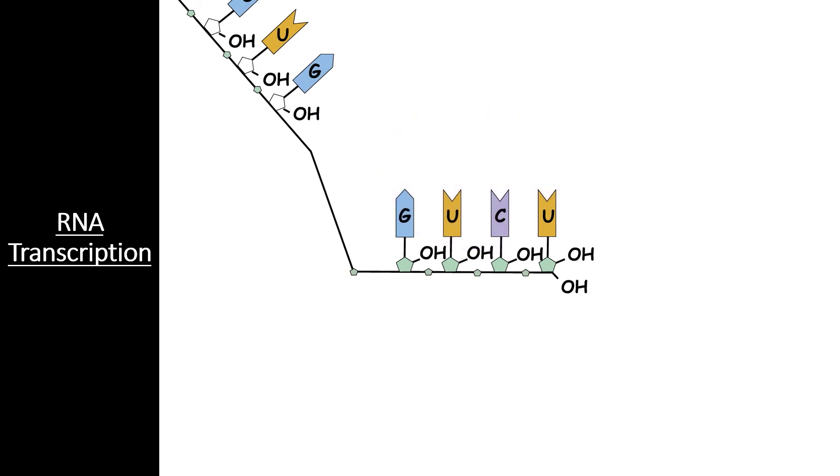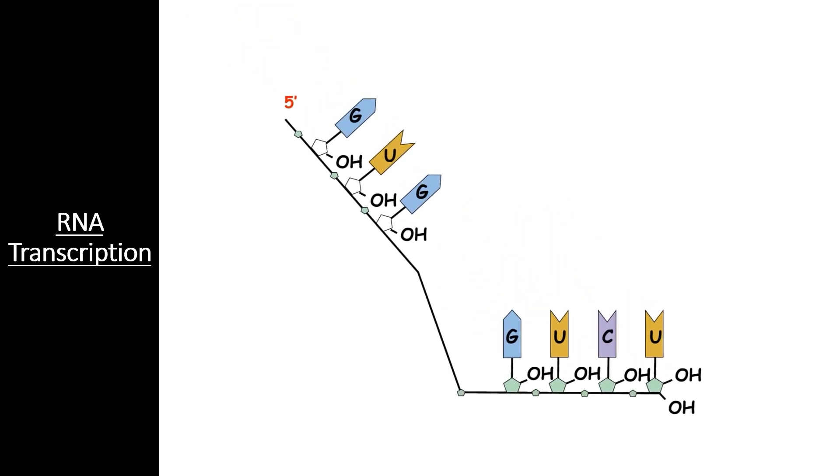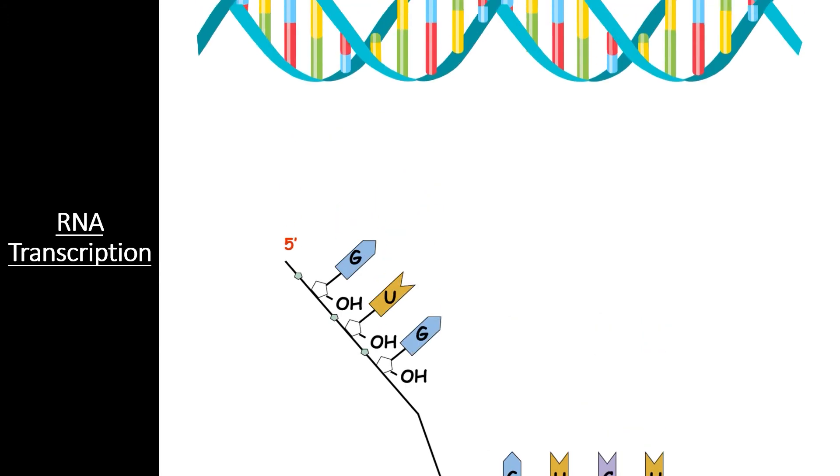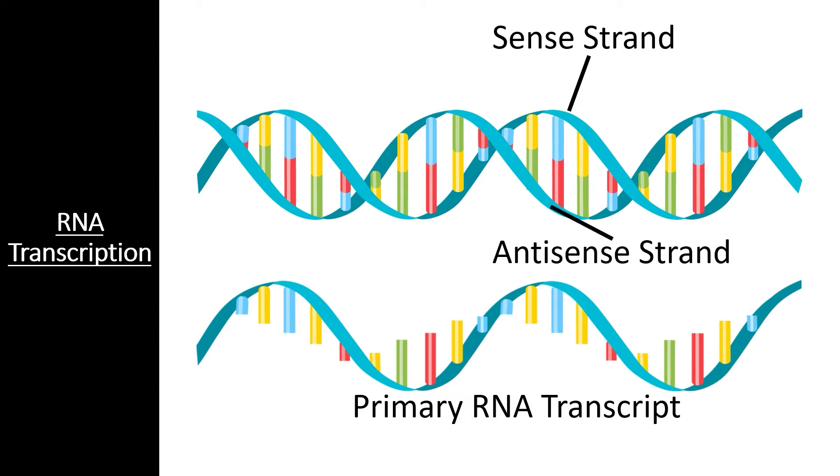This leaves a primary RNA transcript. Keep in mind that this primary RNA transcript is an exact copy of the DNA strand that contains the code for a protein. This is called the sense strand. To make this exact copy, the DNA template strand is actually the anti-sense strand since RNA polymerase can only operate by matching complementary nucleotides to the template strand.